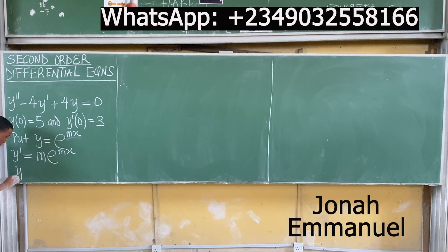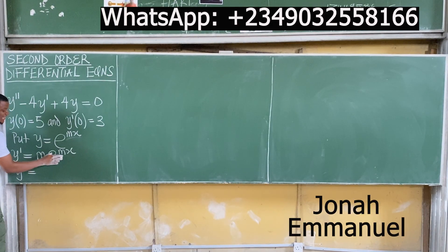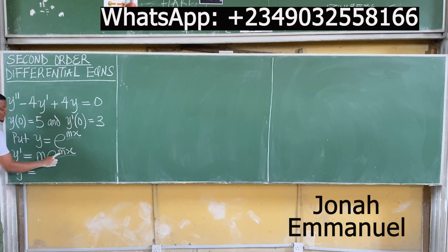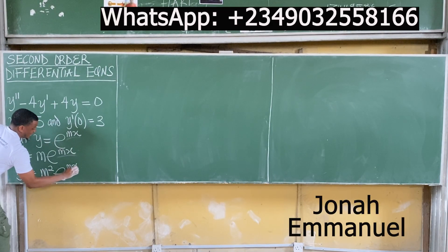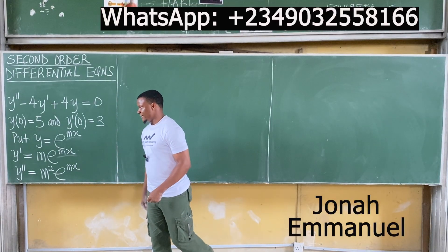Let's get y double prime. For y double prime, come back to y prime. m is a constant, so focus on differentiating e^(mx): differentiate the power to get m, then multiply by m. So m times m gives you m²·e^(mx). These are constants, so you always have these values.